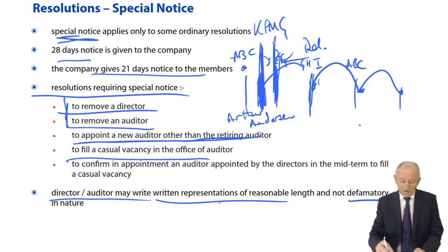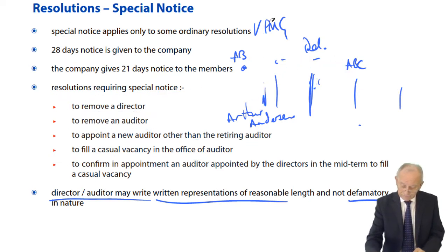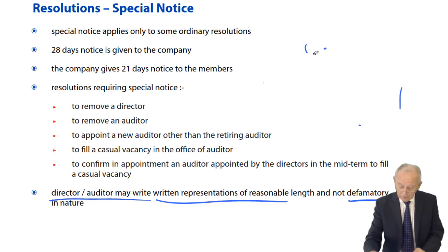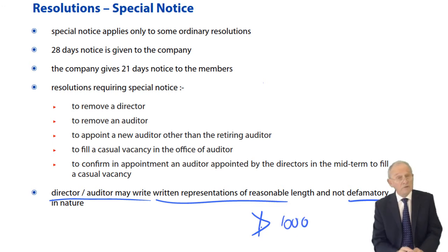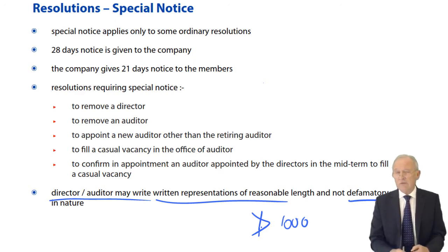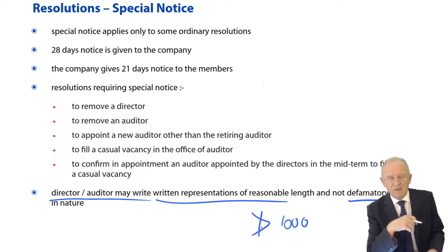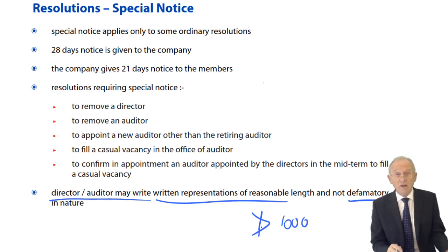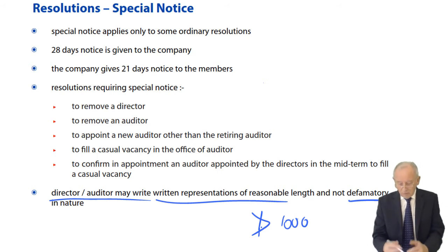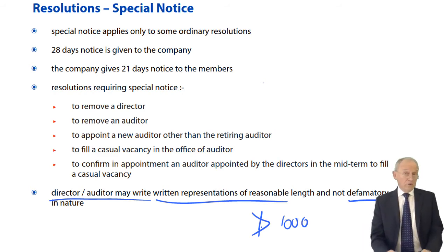The director or auditor may make written representations of reasonable length and not defamatory in nature. Reasonable length means not more than 1,000 words. There's an expression that says a picture is worth a thousand words. At 10 words per line and 30 lines per page of A4, that's three pages in normal examination script — though it would obviously be word-processed. That's what the director or auditor proposed for removal is entitled to write.